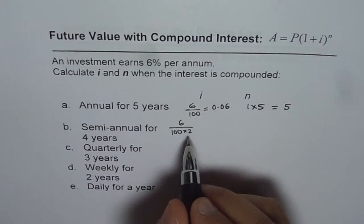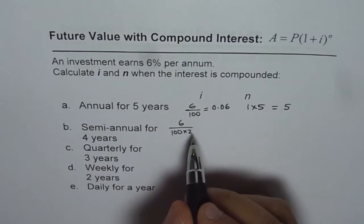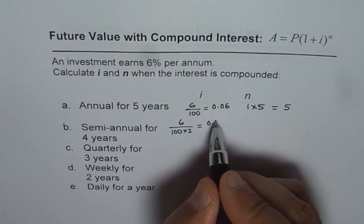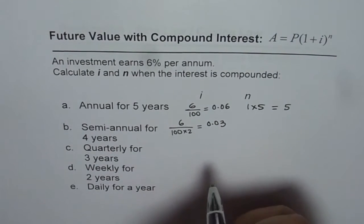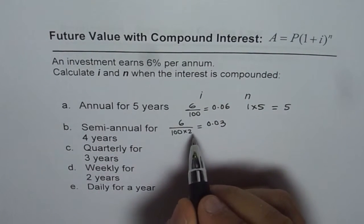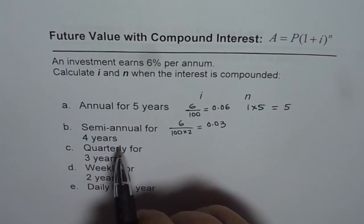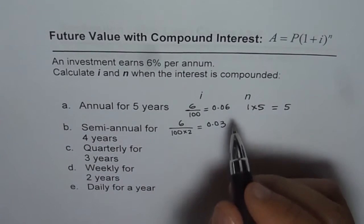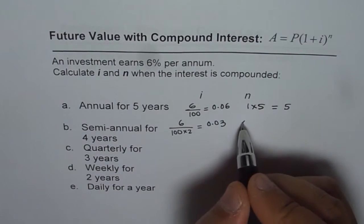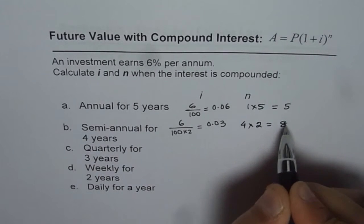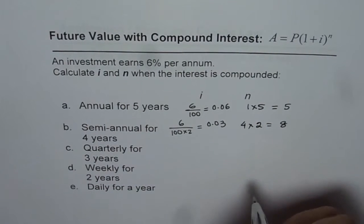So that becomes your interest rate for each compounding period. So that means it will be 0.03. So that is decimal value of the interest rate when it is compounded semi-annually for 4 years. 4 years is number of terms. Now 4 years means 4 years and every year twice. Then 4 times 2 gives us 8. So n value is 8 for us.